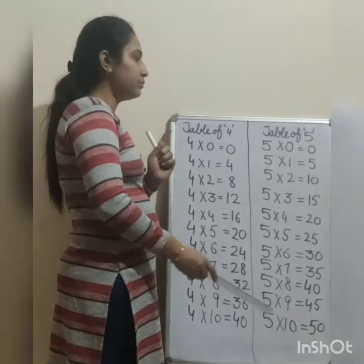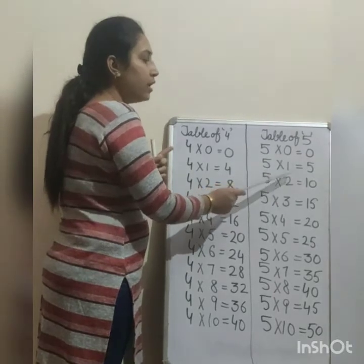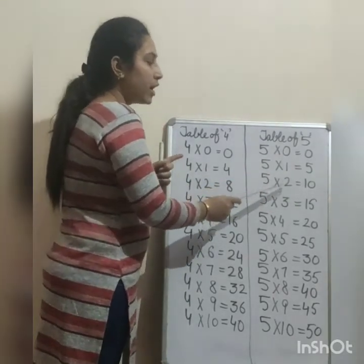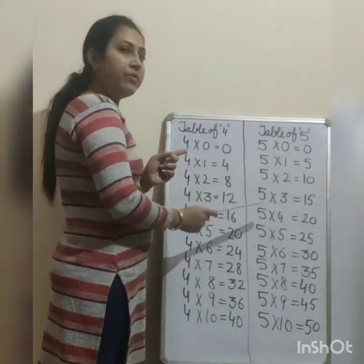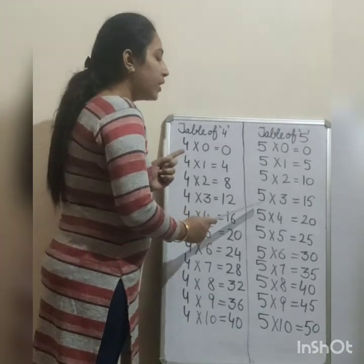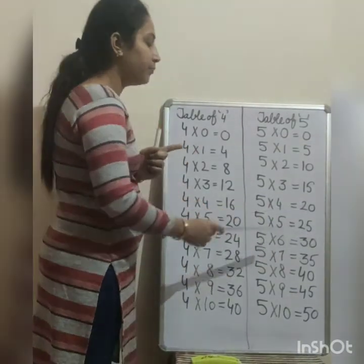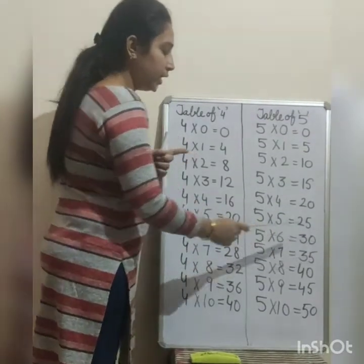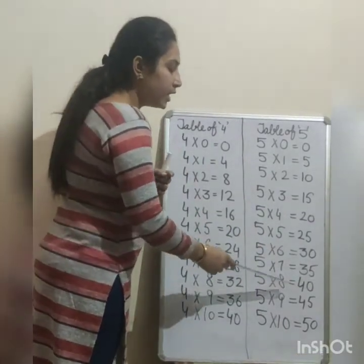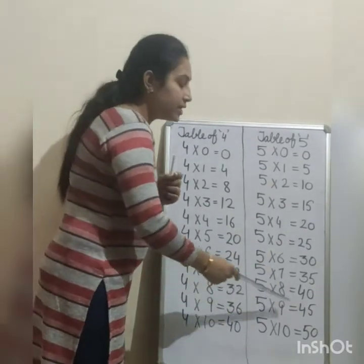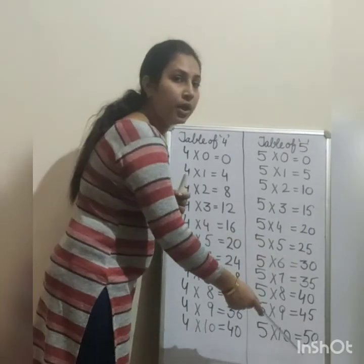Let us speak again. 5 zeros are 0, 5 ones are 5, 5 twos are 10, 5 threes are 15. Everybody speak. 5 fours are 20, 5 fives are 25, 5 sixes are 30, 5 sevens are 35, 5 eights are 40, 5 nines are 45, 5 tens are 50.